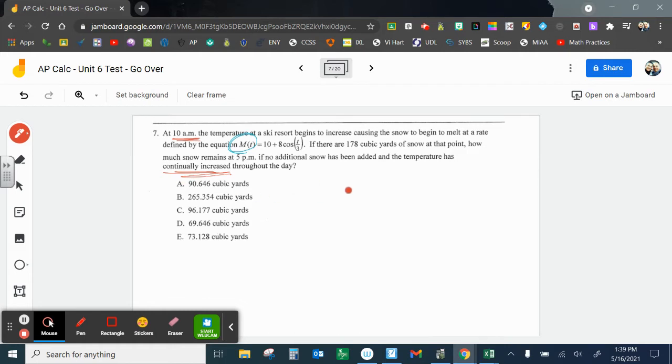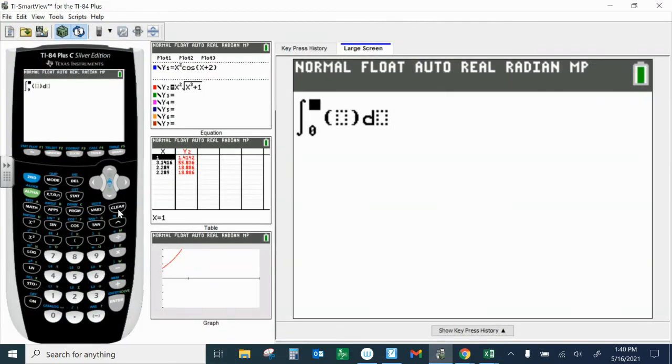And let's look at, so what are we going to do here? And they gave us that problem. And I think it's hours since 10 a.m., so we are going from zero and then to get to 5 p.m., that's seven hours later. And we're doing M(t) dt. That's how much snow begins to melt. And so I start with 178, and I'm going to subtract how much snow melts over those seven hours.